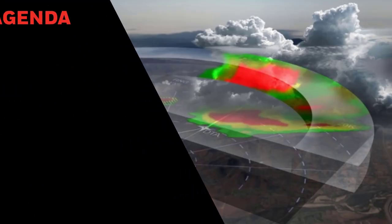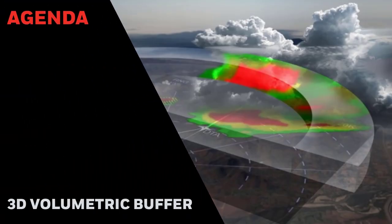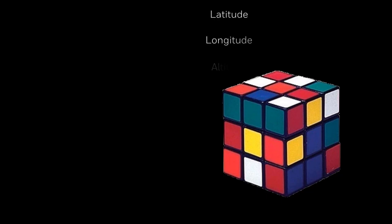This module examines the heart of the RDR 4000 system: the 3D volumetric buffer. A buffer is simply a storage area for information. We store the information the radar collects in a memory organized in three dimensions — latitude, longitude, and altitude. For each location in the 3D buffer, we store associated information like range, reflectivity, turbulence, and whether the returns came from weather or ground.